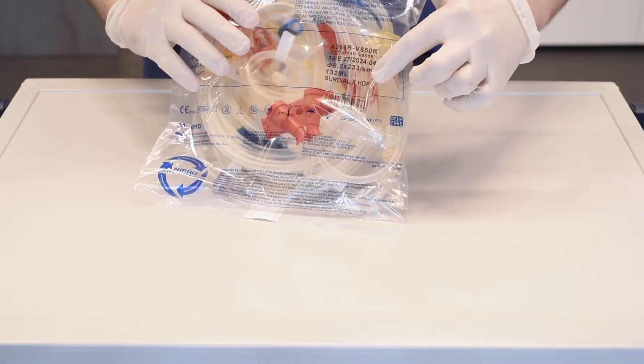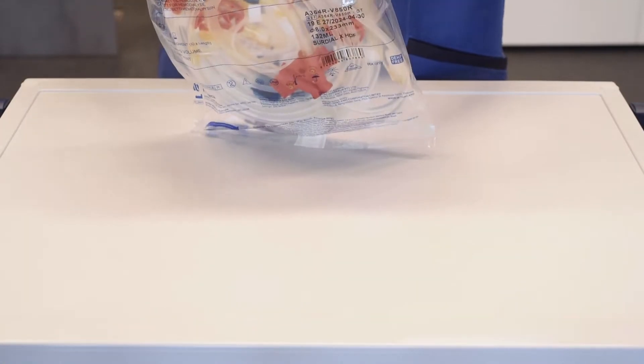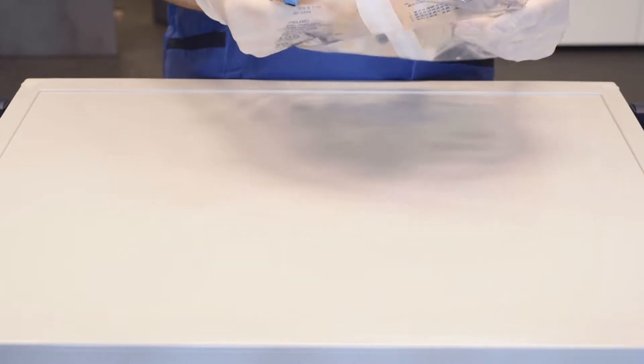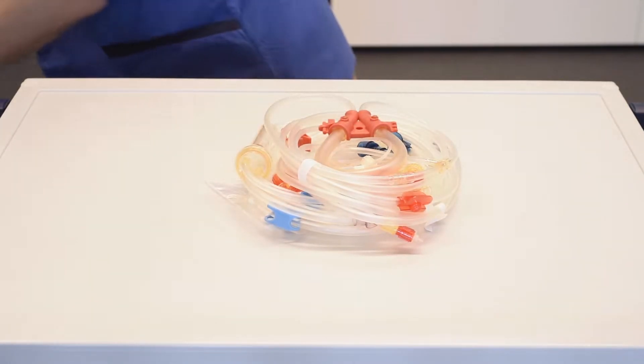The type of bloodline, lab number and other information is found on the package. Open the package where indicated and remove the bloodline from the package.